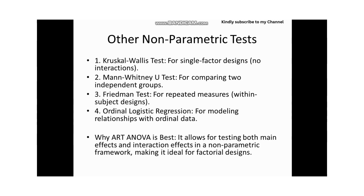In this case, the parametric ANOVA assumptions of normality and homogeneity of variance are violated, and we want to analyze interaction effects in a factorial design. Other non-parametric alternatives include the Kruskal-Wallis test for single factor designs with no interaction, the Mann-Whitney U test for comparing two independent groups, the Friedman test for repeated measures within-subject designs, and ordinal logistic regression for modeling relationships with ordinal data.